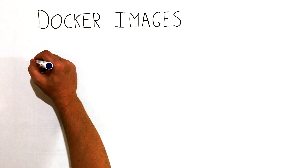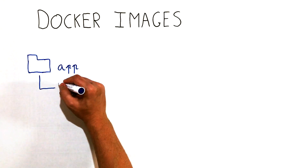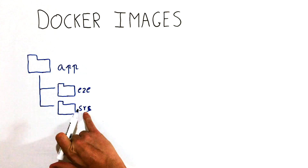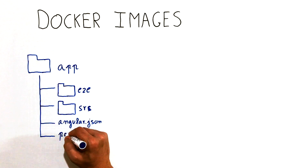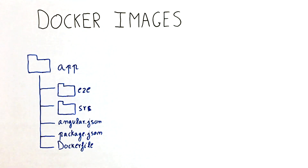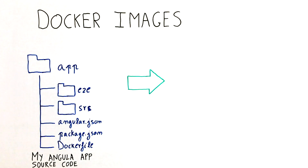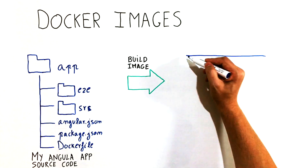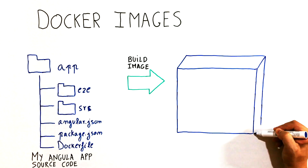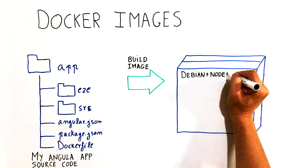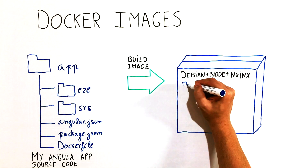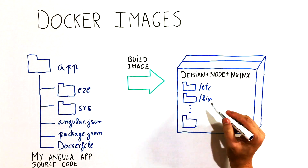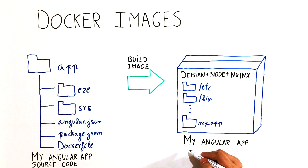On the left side of the picture, you can see some files and folders with the source code of a sample Angular application. In order to run this application in a container, you first have to build an image containing all the application files and third-party dependencies. A file named Dockerfile is required to build the image. The Dockerfile contains the sequence of commands that will be executed to build the image properly. In most cases, the first command is to copy the source code into the image, and the rest of the commands install the dependencies needed to build and serve your application, like Node.js or Nginx, and finally compile the source code. On the right side of the picture, you can see the final image containing the application bundle and other services installed during the build.